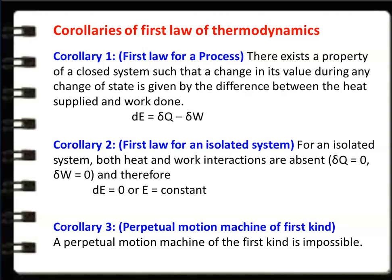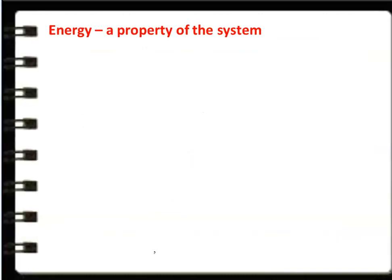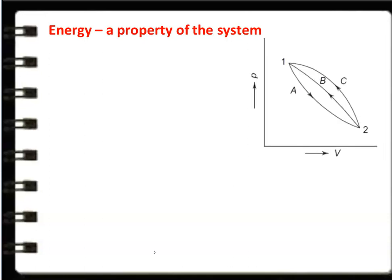To prove that energy is a property and point function, consider a PV diagram with pressure on the y-axis and volume on the x-axis. There are three processes — A, B, and C — and two states: state 1 and state 2. Process A goes from 1 to 2; processes B and C go from 2 to 1. This gives two thermodynamic cycles: 1-A-2-B-1 and 1-A-2-C-1.